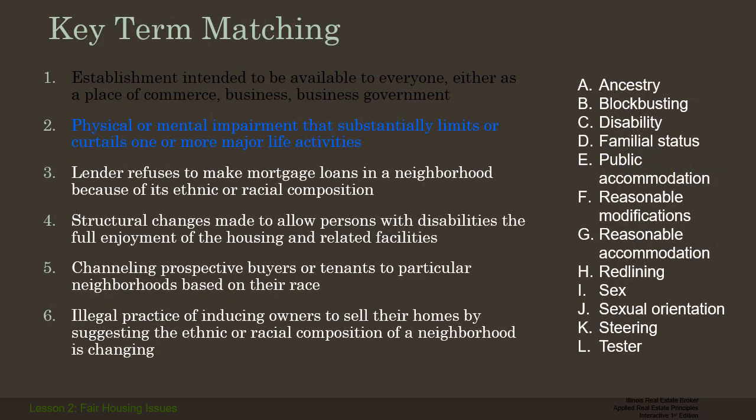Number two: what is the physical or mental impairment that substantially limits one or more major life activities? That is called a disability. Notice we're talking about physical as well as mental impairments. A disability isn't just physical — it could also be mental. It also includes those who are chronic alcoholics if they're in a treatment program, so they would be considered disabled and able to afford themselves protection under the Fair Housing Acts and ADA. If they're not in a treatment program, they're not protected.